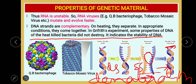This process of denaturation and renaturation demonstrates the thermostability of DNA. In the Griffith experiment, the smooth heat-killed cells' DNA had not lost its property — it successfully transformed the rough strain into the smooth strain, indicating DNA stability. A double-stranded DNA on heating undergoes denaturation, the hydrogen bonds break forming single-stranded structures; on cooling they re-nature into double-stranded DNA. This thermostability is not found in RNA.